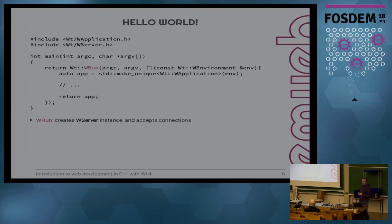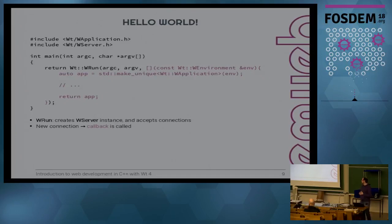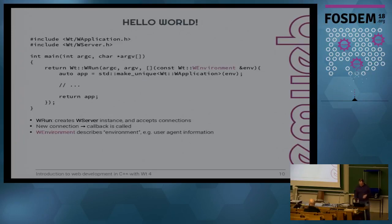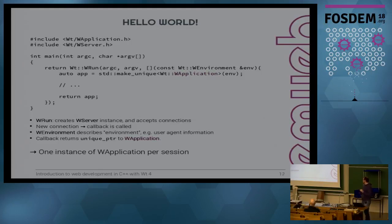In our main function we create a WServer instance using the special WRun function. This WRun function takes your command-line arguments and configures the server — like which port to listen to — then starts accepting connections. When it gets a new connection it calls a callback. This callback gets the WEnvironment, which contains user agent information and session data. In this callback you create a new instance of WApplication and return it. That means there's one WApplication instance per session, creating the illusion that every user is running their own application, even though it could all be running in the same process.